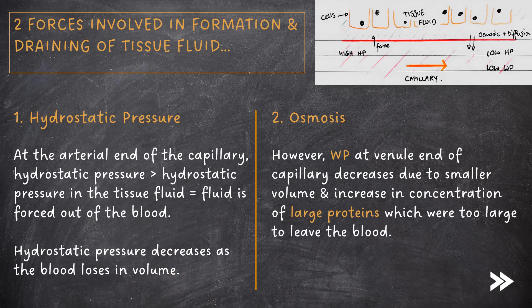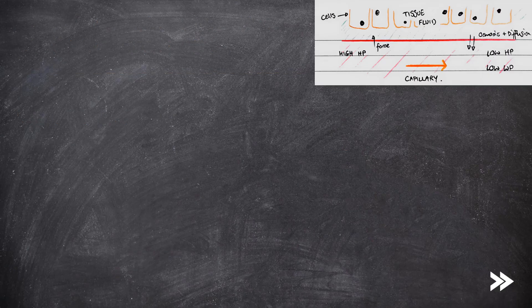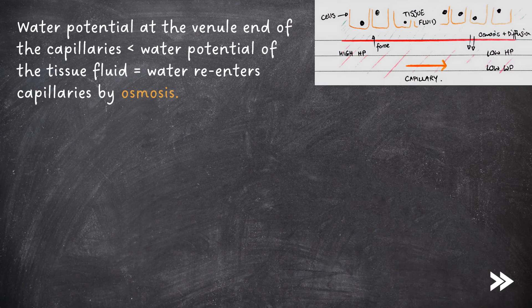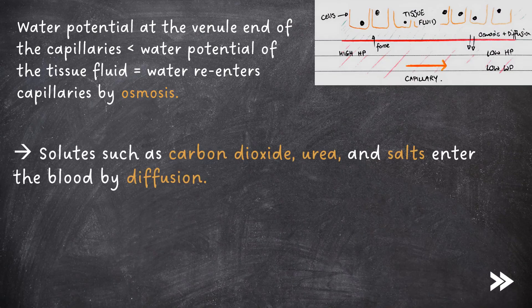The second force is osmosis. The water potential at the venous end of the capillary decreases due to a lower blood volume as well as an increase in the concentration of large proteins, which were too large to leave the blood. The water potential of the venous end of the capillaries is less than the water potential of the tissue fluid, meaning that water re-enters the capillaries by osmosis. Substances such as CO2, urea and salts enter the blood by diffusion.